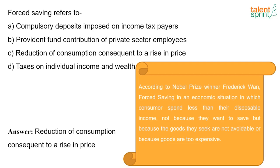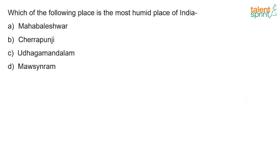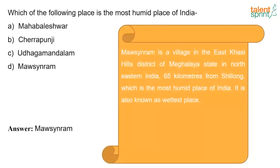Which place is the most humid in India? The answer is Mawsynram. Mawsynram is a village in the East Khasi Hills district of Meghalaya state in the northeastern part of India, about 65 kilometers from Shillong. It is the most humid place of India and is also known as the wettest place.